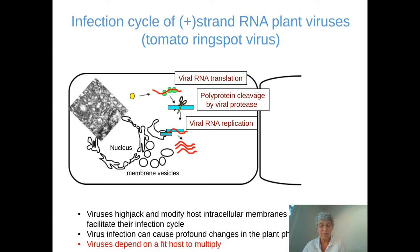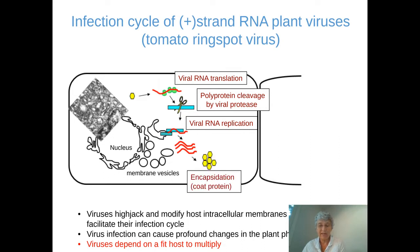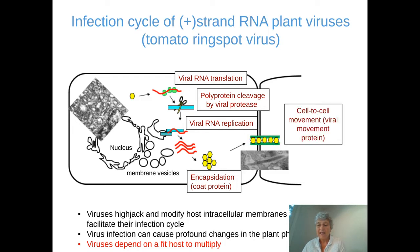I represented this here on the right as membrane vesicles. This complex will allow the formation of new viral RNA progeny, which is then encapsulated — requiring the viral coat protein — and eventually the virus will move from cell to cell into the next cells. In the case of tomato ring spot virus, it does that through the formation of tubular structures.